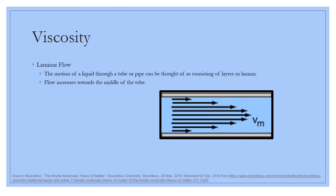Another way to view viscosity is in laminar flow. If you're going into physics or engineering, you'll deal with this in several ways. The idea behind laminar flow is that if you have adhesion between the liquid and the side of a pipe or tube, it's going to resist flow. So the center of the liquid flows at a faster rate, and it gets slower as you go toward the side of the tube.